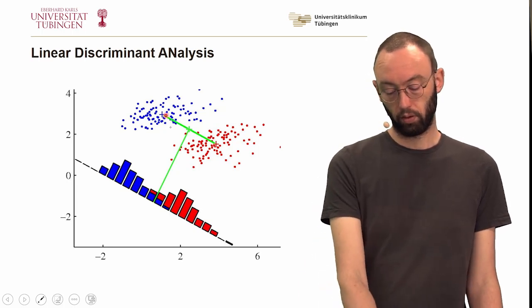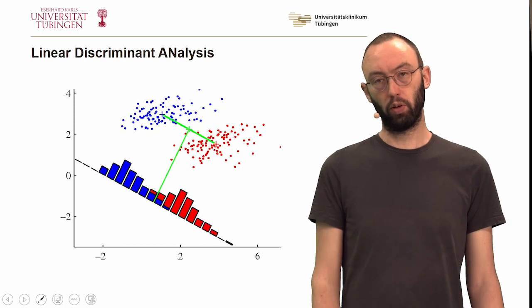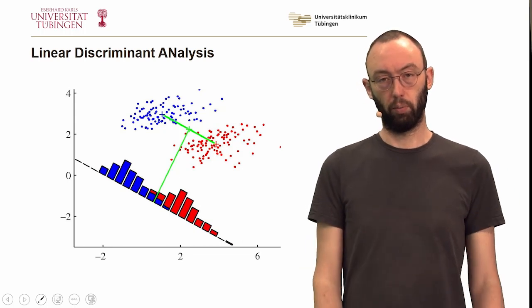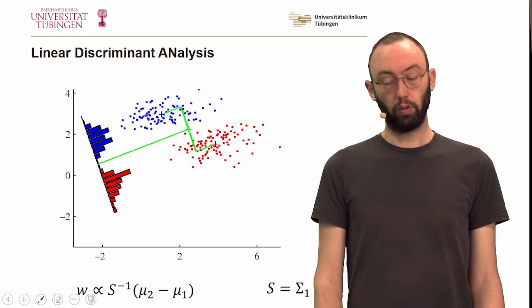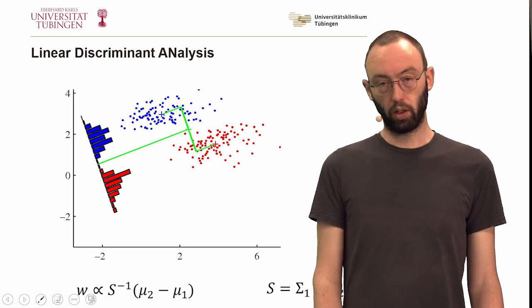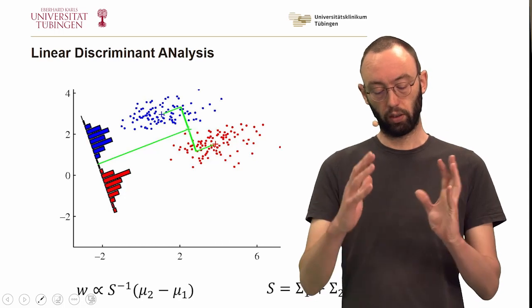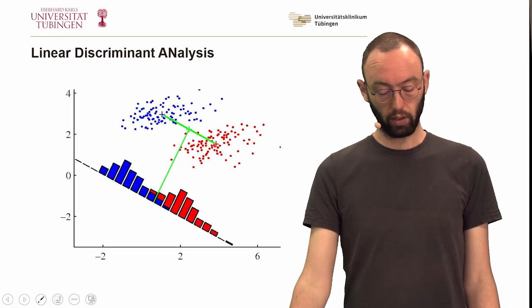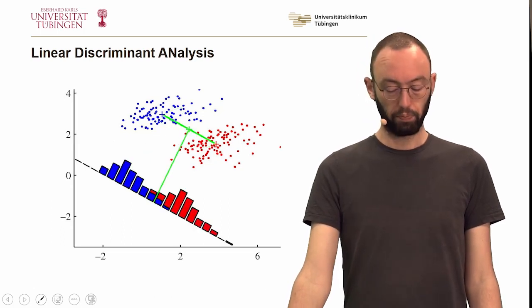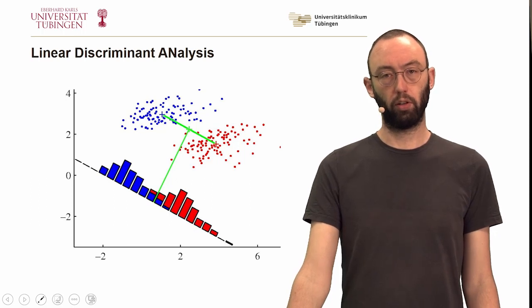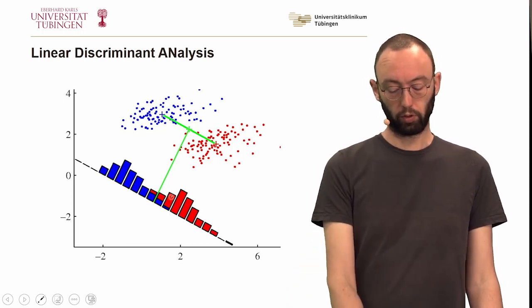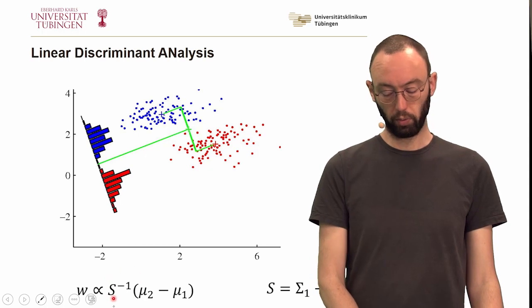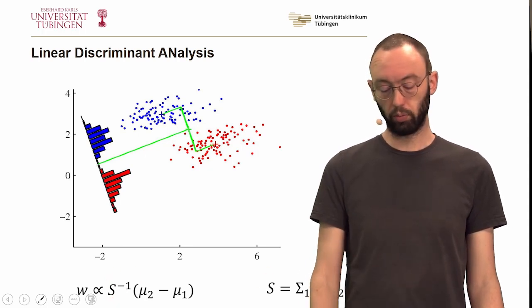It is in the case where the two groups of points have an isotropic covariance structure, it is actually simply proportional to the difference in the means. But if the covariance structure like in this example is not isotropic, so not the same in all directions or slightly tilted, then you need to rotate this line as well. You can clearly see that if we just use the difference in means as a discriminant, then they do have quite some overlap. In turn, if we rotate with the inverse of the covariance matrix, or the inverse of this scatter matrix, then the two groups can be nicely separated.